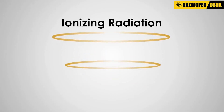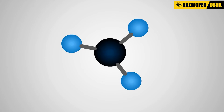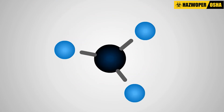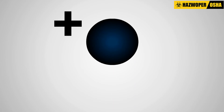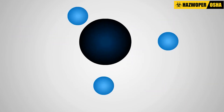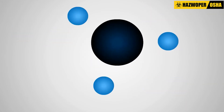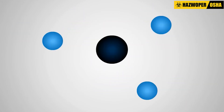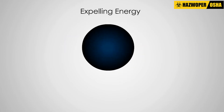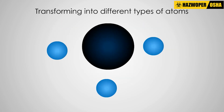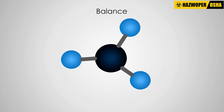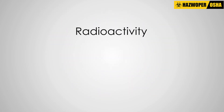Ionizing radiation, on the other hand, has much more energy, and is powerful enough to knock electrons off of atoms. This causes the atom to become unbalanced, and either positively or negatively charged. If an atom is unbalanced, it will throw off energy in an attempt to get its nucleus back into balance and stability. This process of expelling energy and transforming into different types of atoms to reach a balance is called radioactivity or radioactive decay.